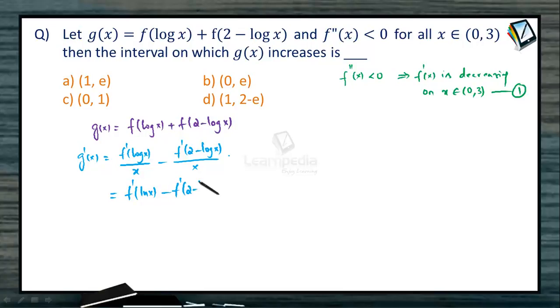As we are talking in the domain 0 to 3, the denominator is always positive. So the sign of g'(x) depends on the sign of the numerator.